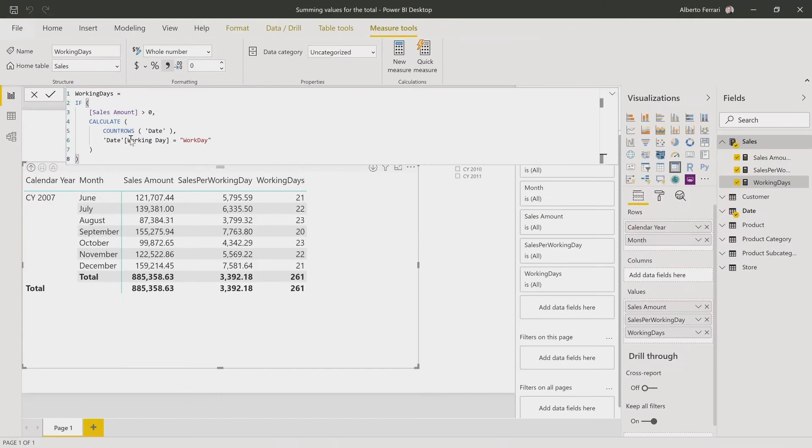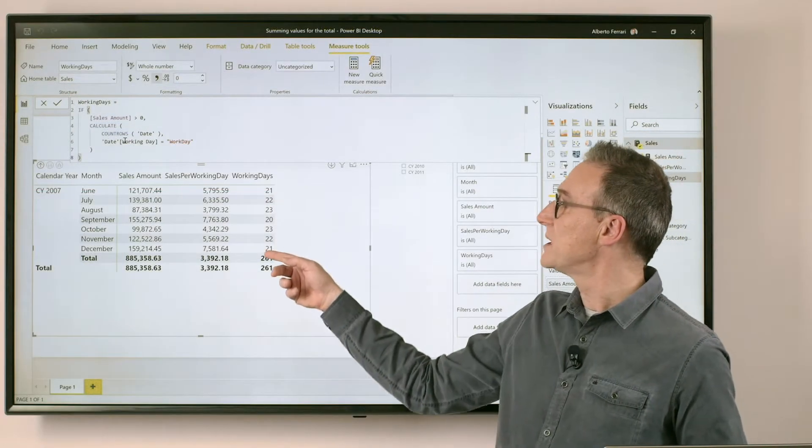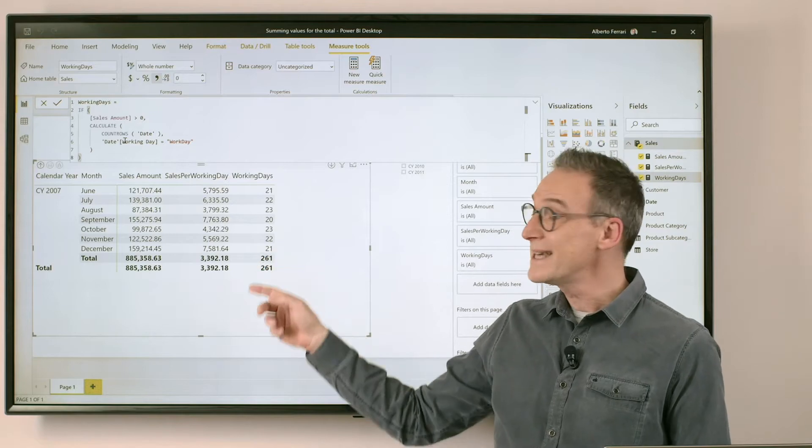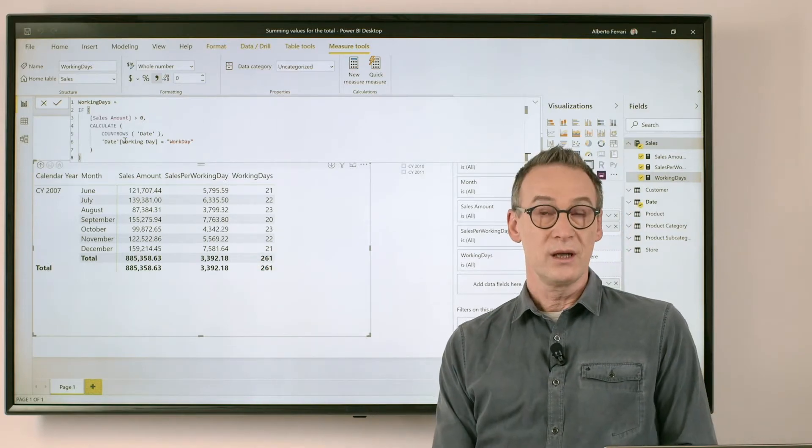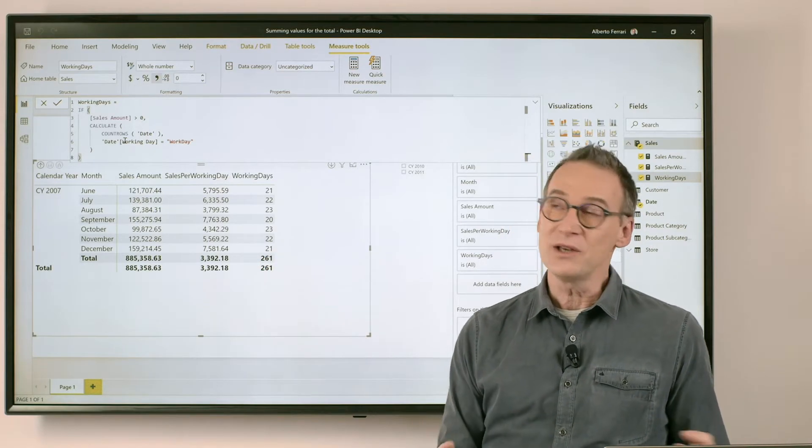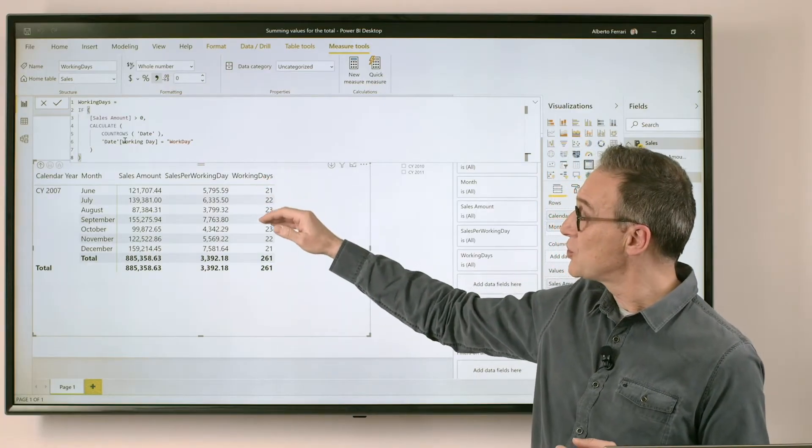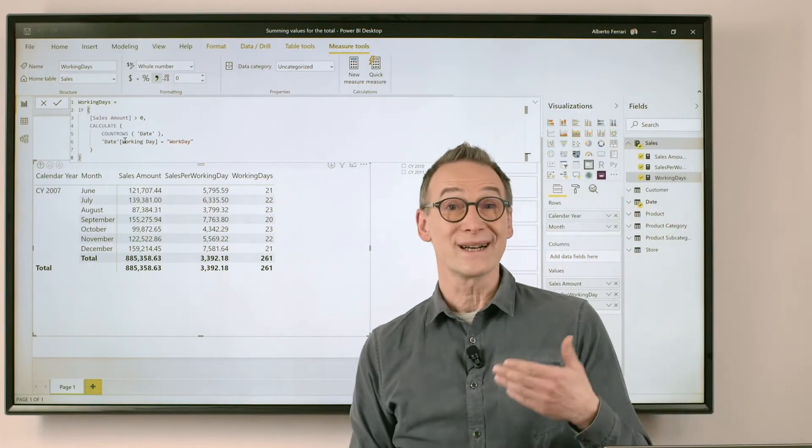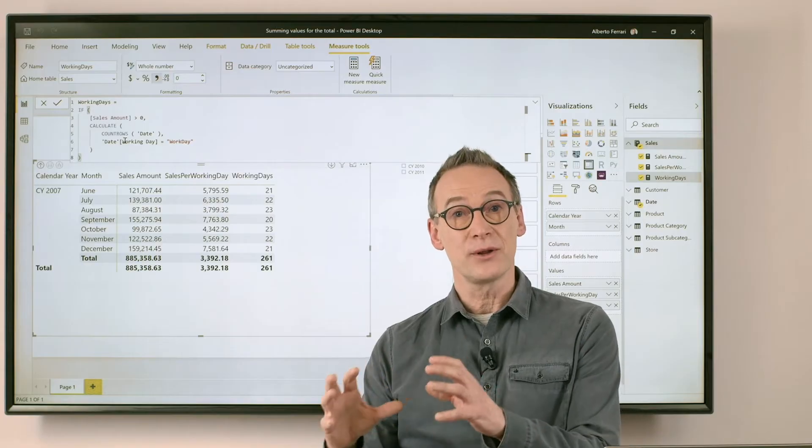And as a result, you see that now the number is no longer visible, but still the total is wrong. Why that? Well, even if we're not showing the value row by row, we are still taking that into account at the grand total.